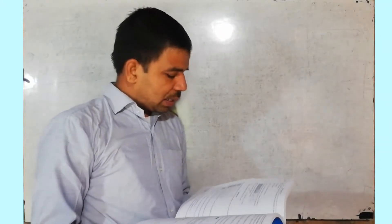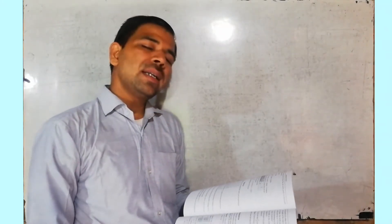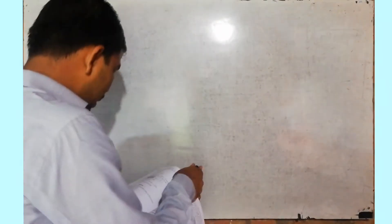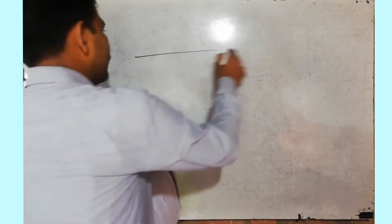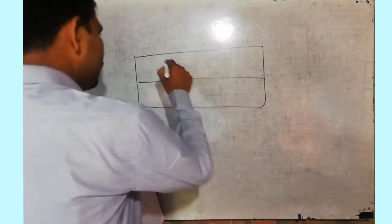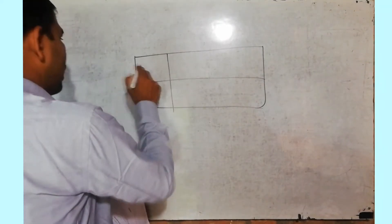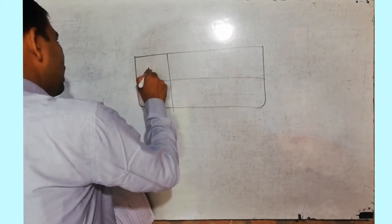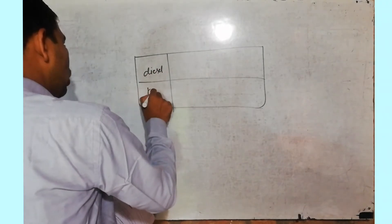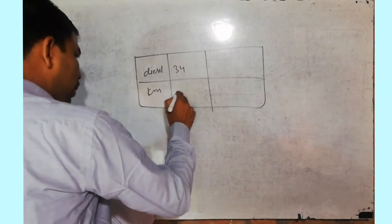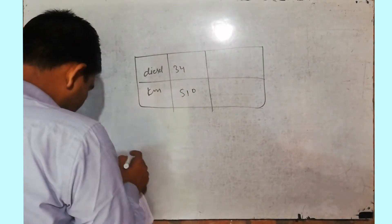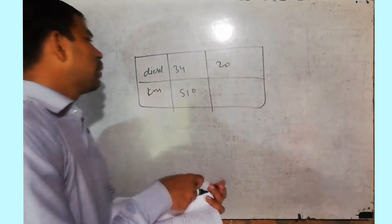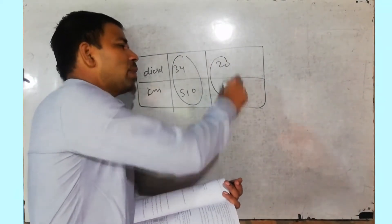Question number 3: a truck covers a distance of 510 km in 34 liters of diesel. Make a table — diesel here, kilometers here. 34 liters gives 510 km. The question asks: how much distance would it cover in 20 liters of diesel? This is a direct proportion question — set up this by this equals this by this, and find the answer.